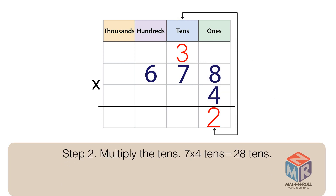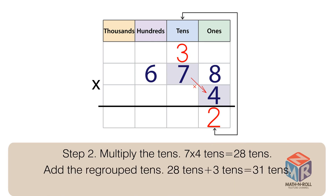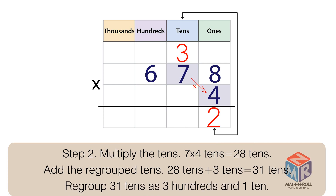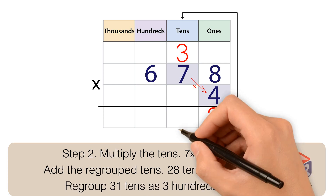Step 2: Multiply the 10s. 7 × 4 tens equals 28 tens. Add the regrouped tens: 28 tens plus 3 tens equals 31 tens. Regroup 31 tens as 3 hundreds and 1 ten.